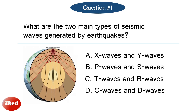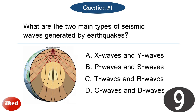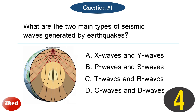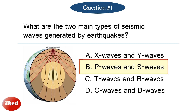Question number one. What are the two main types of seismic waves generated by earthquakes? The correct answer is letter B, P waves and S waves.